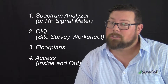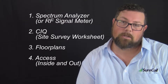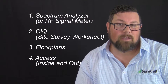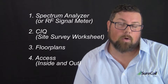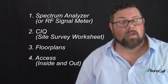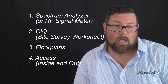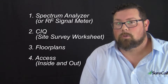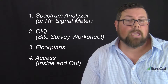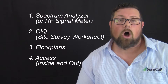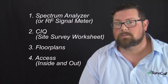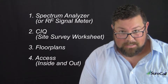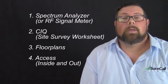The complete site survey is going to be a little bit different. You do need to make sure you have either your spectrum analyzer or your RF signal meter. You also need to make sure that you have a copy of the commercial installation questionnaire or site survey that you can find at surecall.com. You're also going to need a copy of the floor plan, so you can make sure to indicate the signal readings on the actual floor plans themselves.